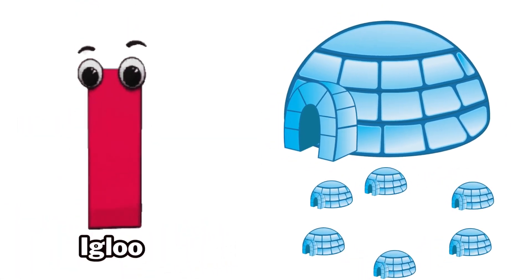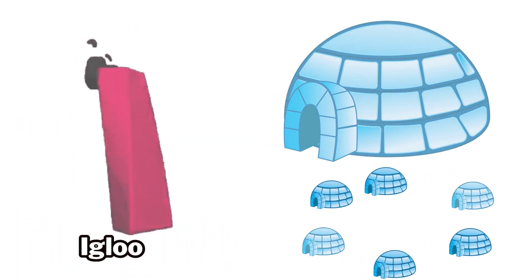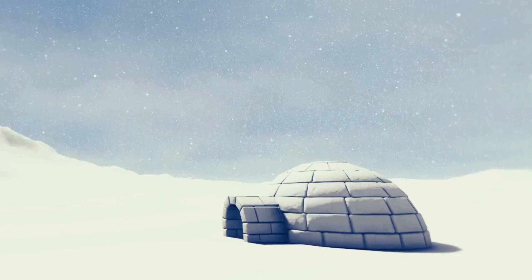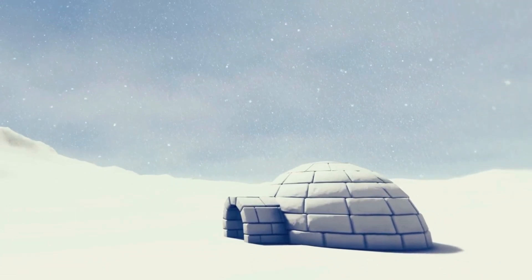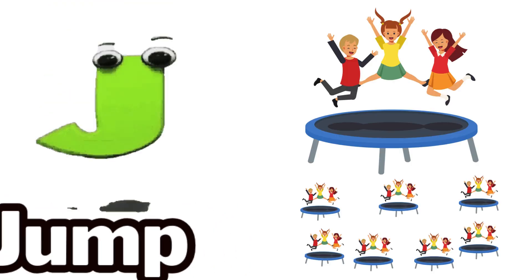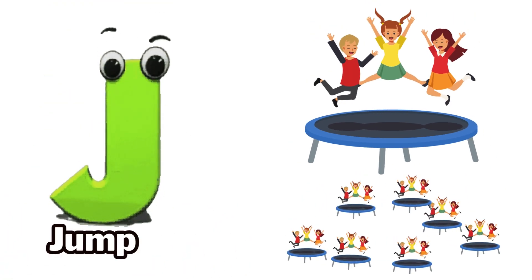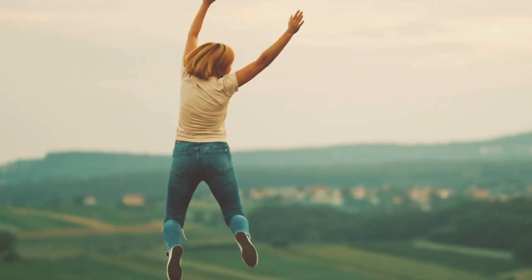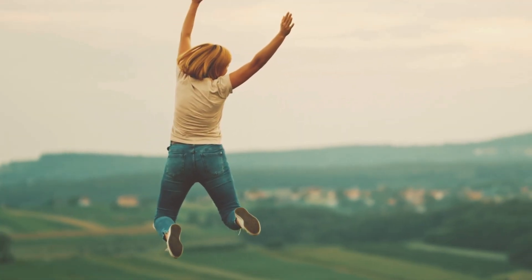I is for igloo, i-i-igloo. J is for jump, j-j-jump.